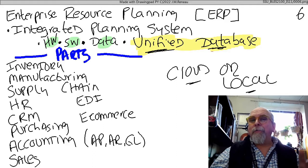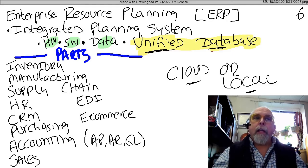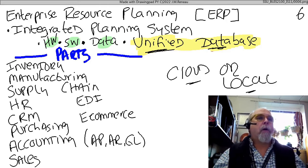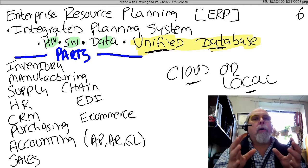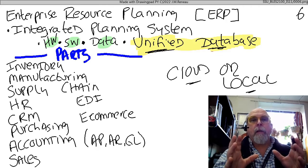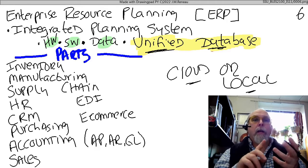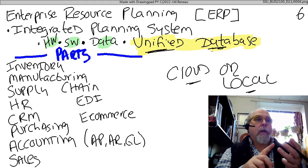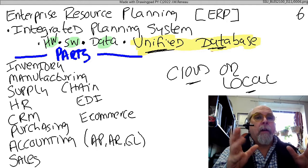There's a third thing that's bigger than supply chain or customer relationship management. It's known as an ERP system, or enterprise resource planning. An ERP is an integrated planning system — it does everything. It has software, hardware, data, and most importantly a unified database of everything: inventory, manufacturing, supply chain management, HR, human resources, customer relationship management, purchasing, accounting, accounts payable, accounts receivable, general ledger, payroll, sales, EDI, and e-commerce. It has it all — it's a giant monolithic one system that does everything for everybody.